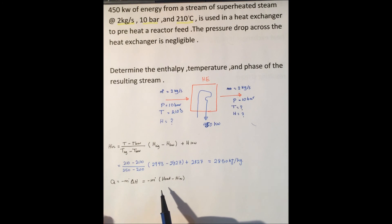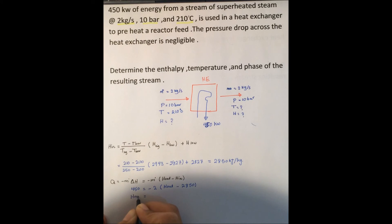Q equals 450 equals minus m dot times (H_out minus H_in), which is 2850. H_out will equal 2625 kilojoules per kilogram.